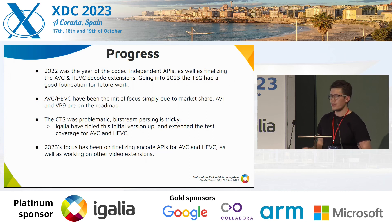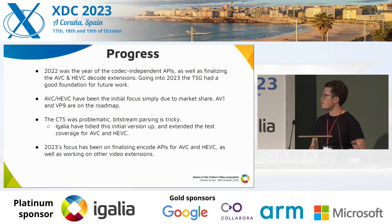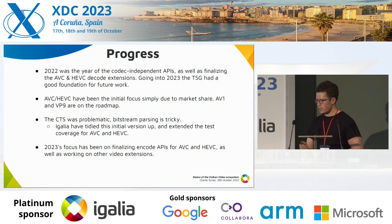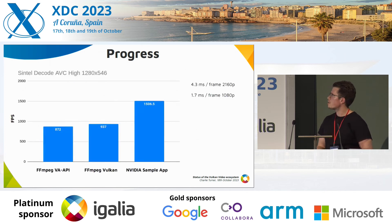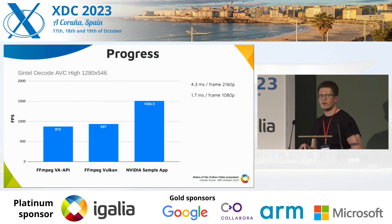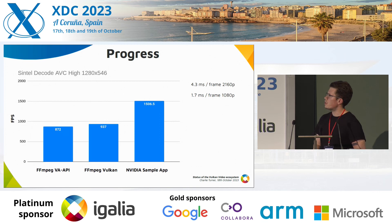2023's focus going towards the end of the year is to finalize the encode APIs for AVC and HEVC, as well as working on some other codec extensions. To give a bit of a flavor — this is still quite provisional. We're focusing more on correctness rather than performance right now, but already we're seeing fairly strong signs.